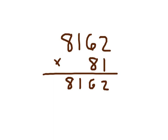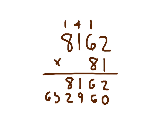Now working with that 8, which is worth 80, so place the 0. 8 times 2 is 16 — place the 6, regroup the 1. 8 times 6 is 48, plus 1 is 49 — place the 9, regroup the 4. 8 times 1 which is 8, plus 4 which is 12 — place the 2, regroup the 1. And then finally 8 times 8 which is 64, plus that 1 which is 65.